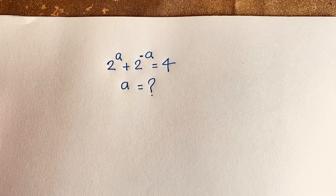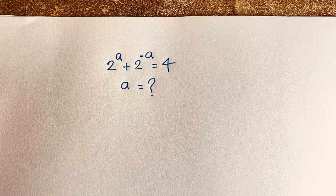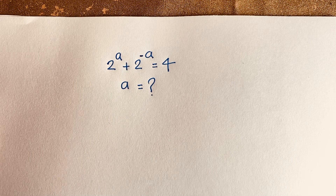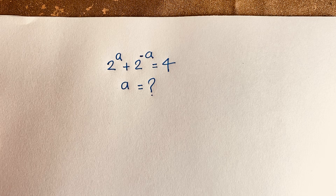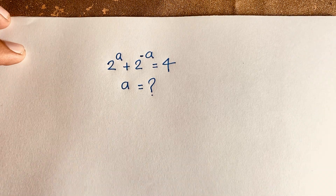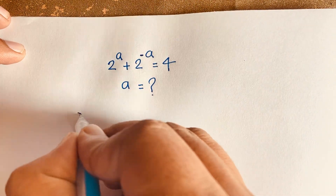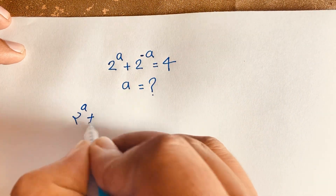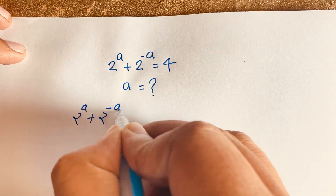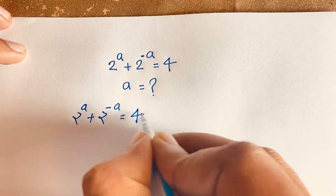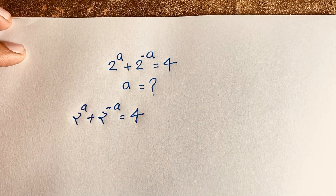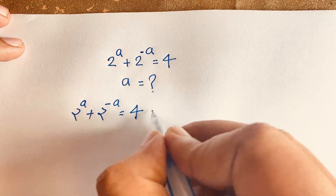Hello everyone. In this video we solve this nice Math Olympiad question. The question is: 2 to the power a plus 2 to the power minus a is equal to 4. What is a? This is our question.